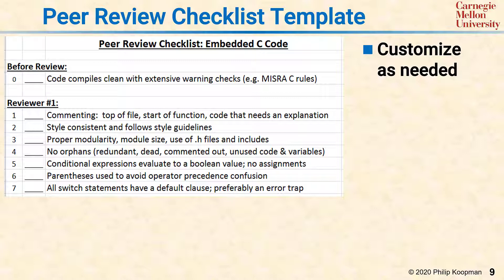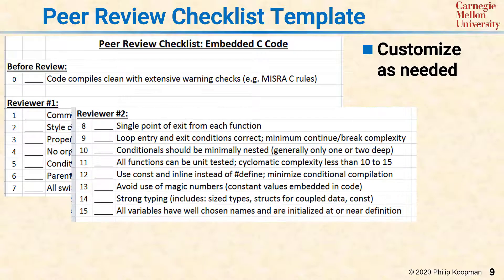As reviewer one is looking at a handful of lines of code and going down the first seven items, reviewer two is looking at the next set of items. Reviewer number two is asking: is there a single point of exit from each function? Does the looping structure make sense? Does the code avoid deeply nested conditionals? Is the complexity of the code acceptable? Has the use of macros been reduced, minimized, or even completely eliminated? Is there an avoidance of the use of magic numbers — constant values embedded in the code that should instead be defined as named constants?